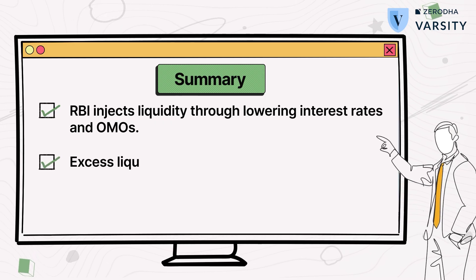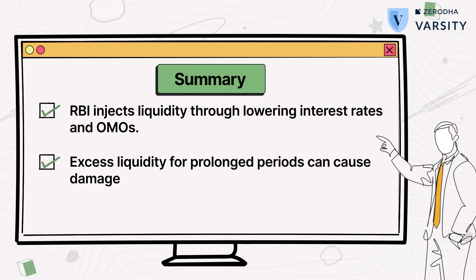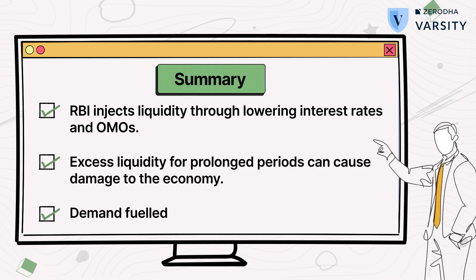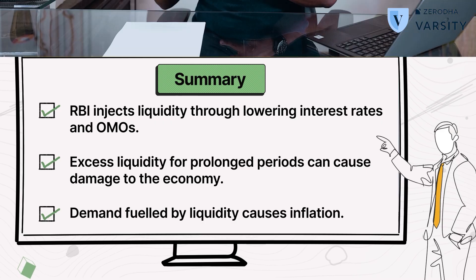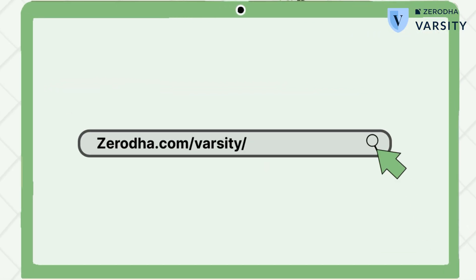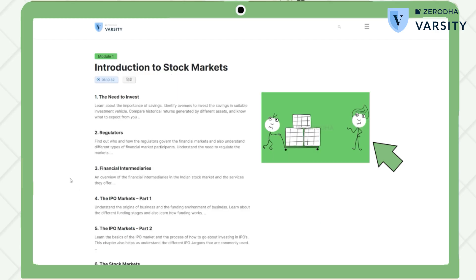Excess liquidity for a prolonged period comes with a baggage. Demand for goods and services goes up and, as explained earlier, demand fueled by liquidity leads to inflation. When inflation increases, the central banks will again have to step in and use the same levers — that is, the reverse repo, repo, and open market operations — to control inflation and suck all the excess liquidity from the system. Apart from tweaking these, the central bank also tweaks something called the CRR, or cash reserve ratio.